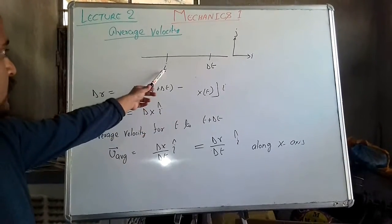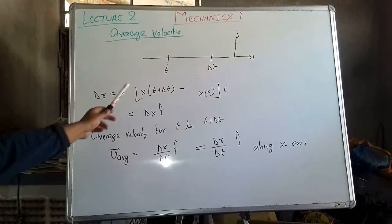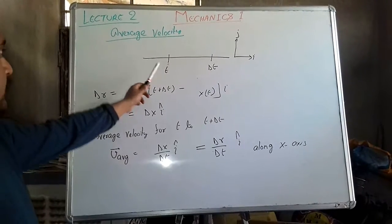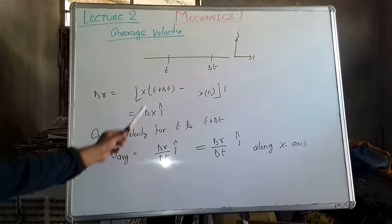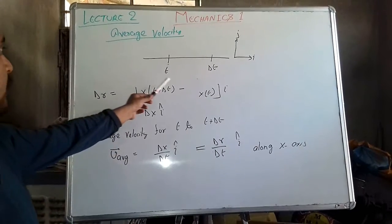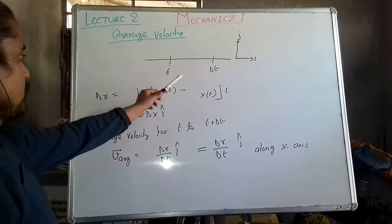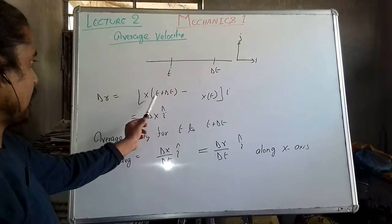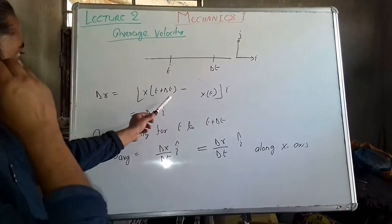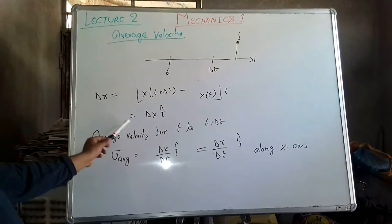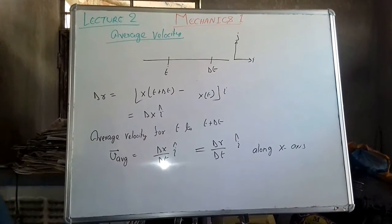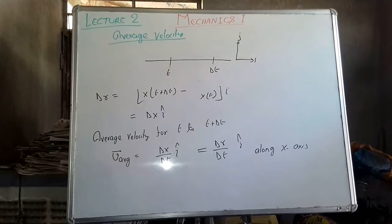Suppose t is the position where a particle has travelled x distance, and suppose there is an incremental time delta t from which x plus delta x, t plus delta t position has arrived. So delta r is equal to delta x i hat. This is the position vector.